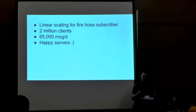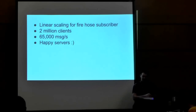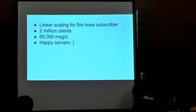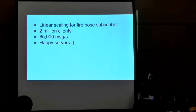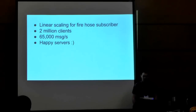So when the messages come in, each broker receives the published message and then publishes to Kafka. And then Kafka deals with distributing it among its subscriber group. The nice thing about that is we were able to scale MQTT for the Firehost subscriber as far as we wanted. We had it up to two million clients and 65,000 messages per second. Our servers weren't overheating, there were no hotspots, and we could keep on scaling as much as we needed to.